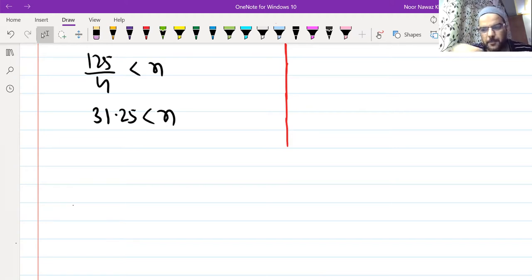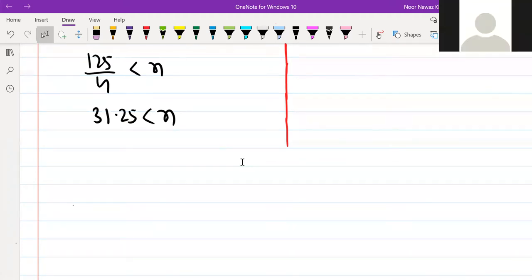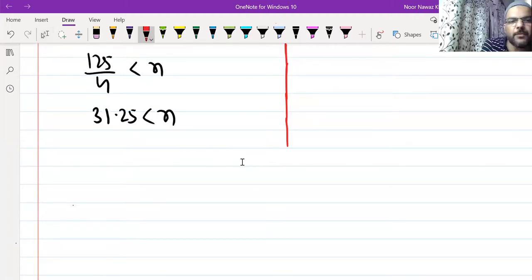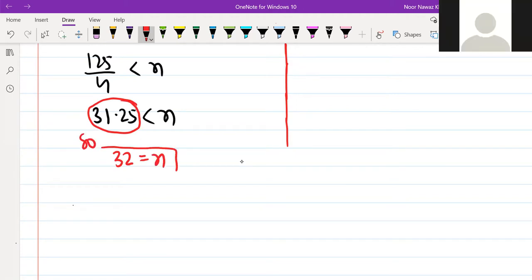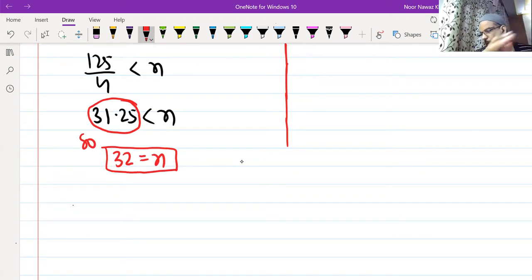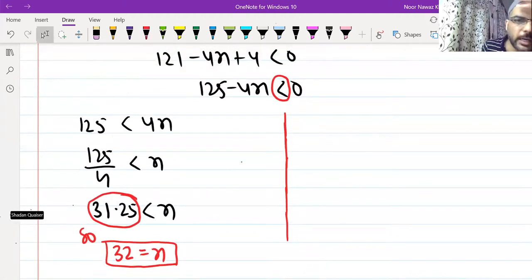n is the position. Which term is less than zero? Position is not in fraction or decimal. You have to think what integer comes after 31. After 31.25, the integer is 32. So 32nd term will be first negative. After this all terms will be negative, but the next integer after 31.25 is 32, so 32 term will be first negative term.